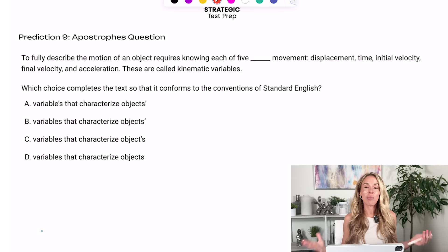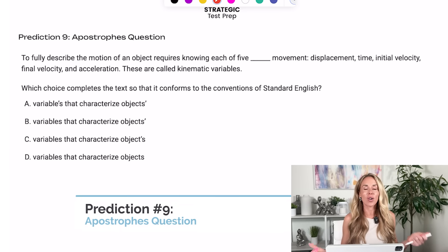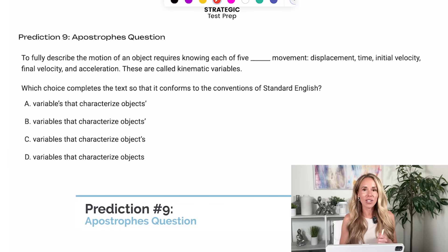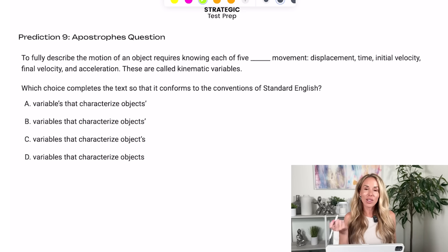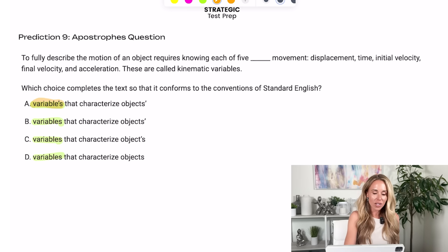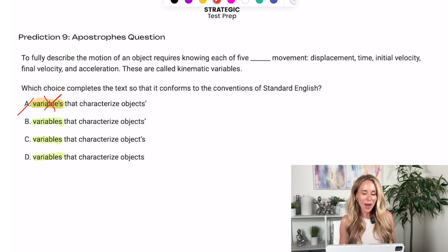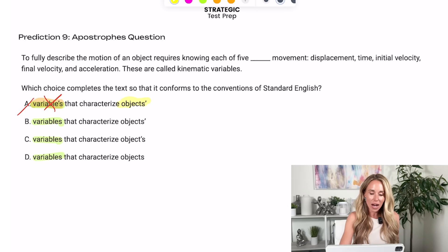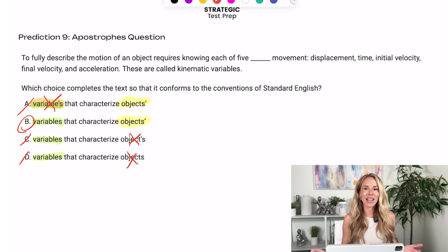All right. Prediction nine. I think you're going to have an apostrophes question on your test. So with apostrophes, what you can do is you can play majority roles. So when I look at the four options for variables, I notice three of them are the same and one of them is different. This one has an apostrophe with it. So that's a weirdo. I'm going to get rid of A. Then when I look at all the objects, it looks like these two objects are the same and then these two are different. So I'm going to get rid of C and D. The answer has to be B.